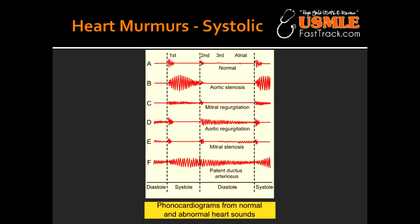Name all the systolic heart murmurs. Systolic heart murmurs include mitral or tricuspid regurgitation, aortic stenosis, ventricular septal defect, and mitral valve prolapse.